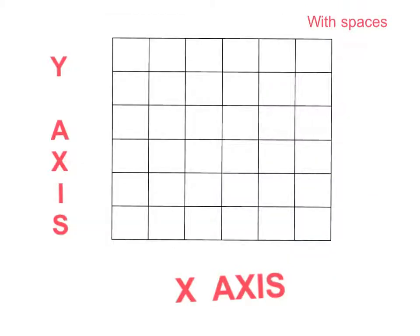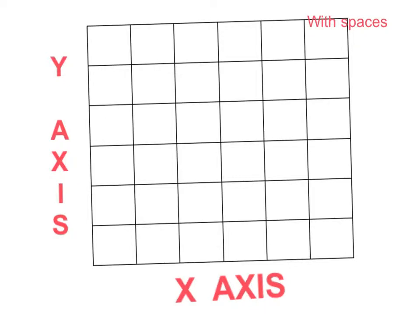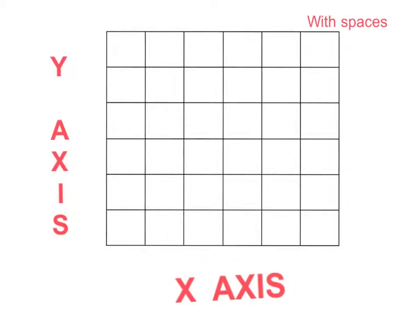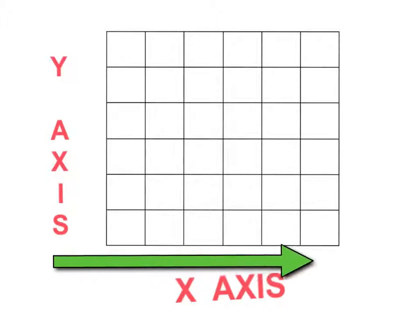Today we're going to look at a couple of different grids. I've got a pretty simple grid here to start with, and with this grid we're going to learn the special parts that a grid must have. When we look at a grid, there are squares that run along this way, which is our x-axis. The squares that run horizontally — so across — are our x-axis.